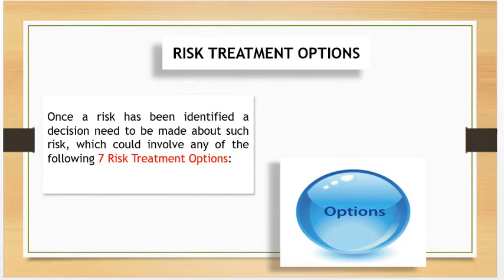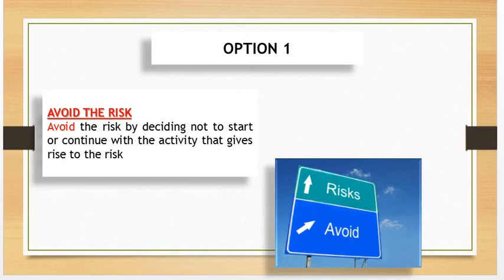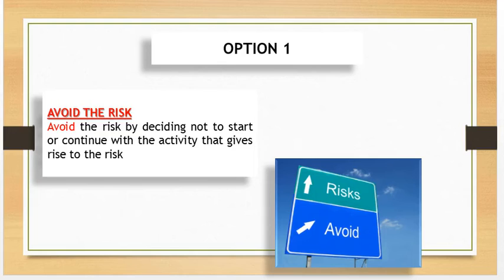There are many risk treatment options, and ISO 31000 recognizes seven risk treatment options. We are going to consider Option One in this webinar, and in other webinars we will consider the remaining options. Option One is to avoid the risk — to avoid the risk by deciding not to start or continue with the activity that gives rise to the risk.